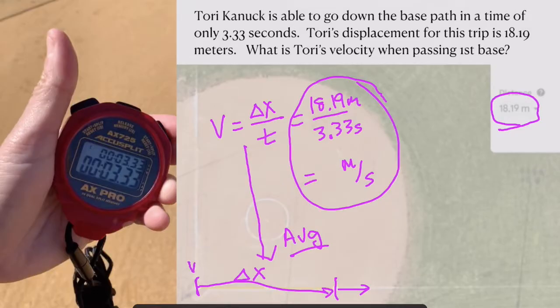Her velocity at the beginning was zero. Her velocity at the end is going to be a little bit higher than the average. The first part of this run, she was picking up speed. And then the remainder, she ran at top speed. That top speed is not the same as the answer we got when we found the velocity.